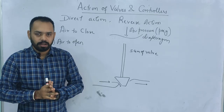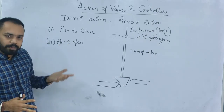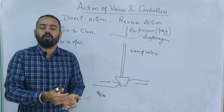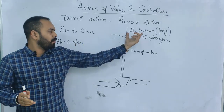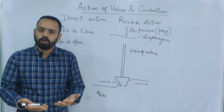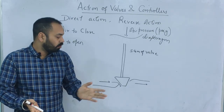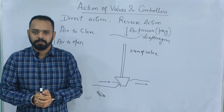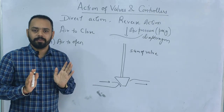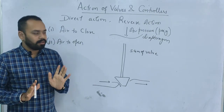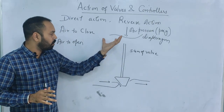Air-to-close: more the air pressure, more is the closing, less is the flow rate. Air-to-open means more the air pressure, more is the opening. For example, if you give 3 psig pressure to the valve and the valve is 20% open, and then you increase to 8 psig, the valve will be 60% or 50% open. Air-to-open: as air pressure increases, the valve opening increases and the flow rate increases.